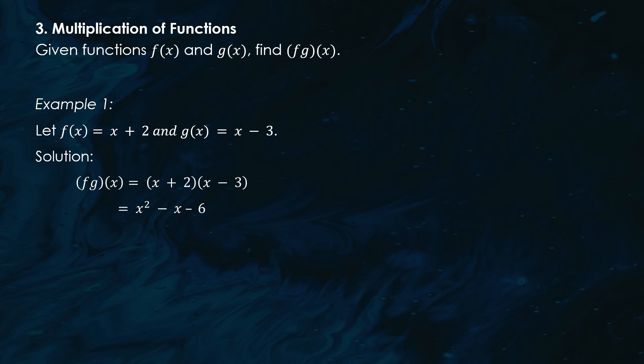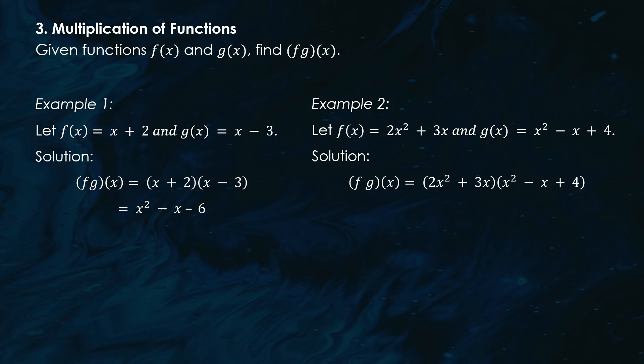Another multiplication example: let f(x) = 2x² + 3x and g(x) = x² − x + 4. To find the product, (f · g)(x) = (2x² + 3x)(x² − x + 4). Expanding and simplifying, we get 2x⁴ + x³ + 5x² + 12x. So the product of the functions f and g is 2x⁴ + x³ + 5x² + 12x.